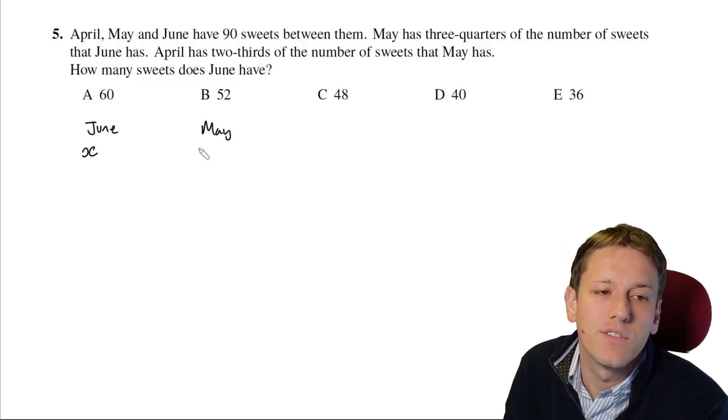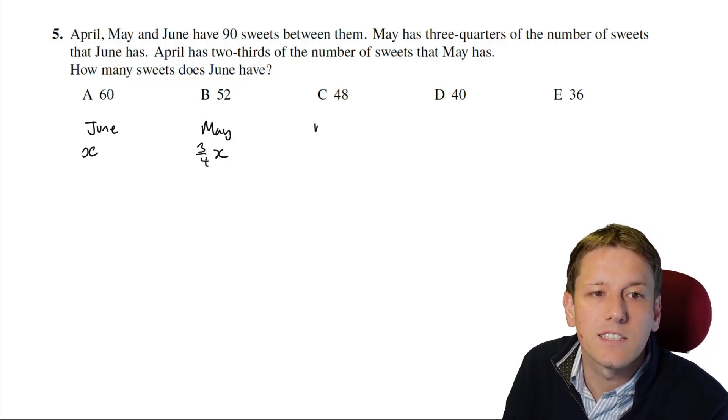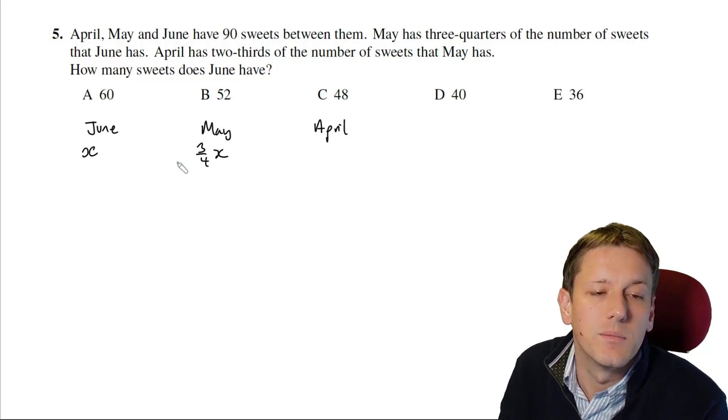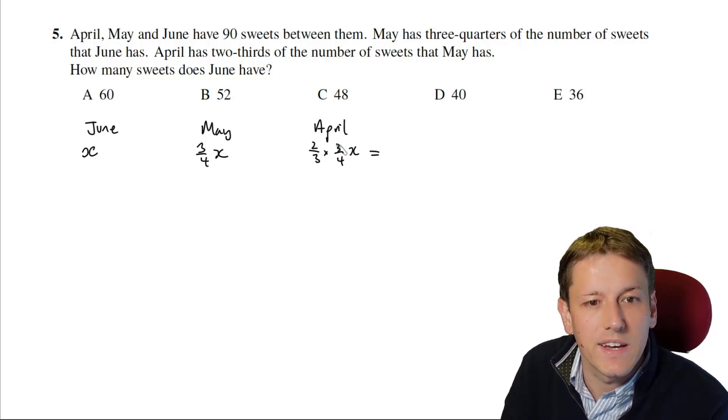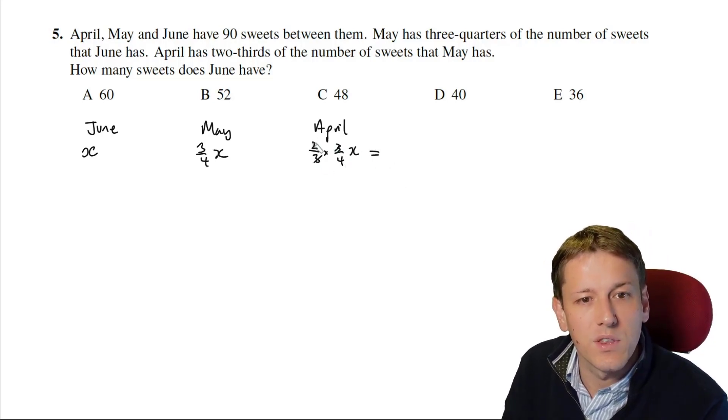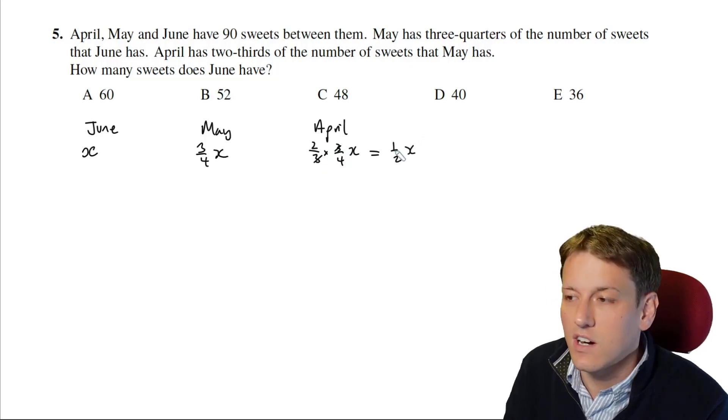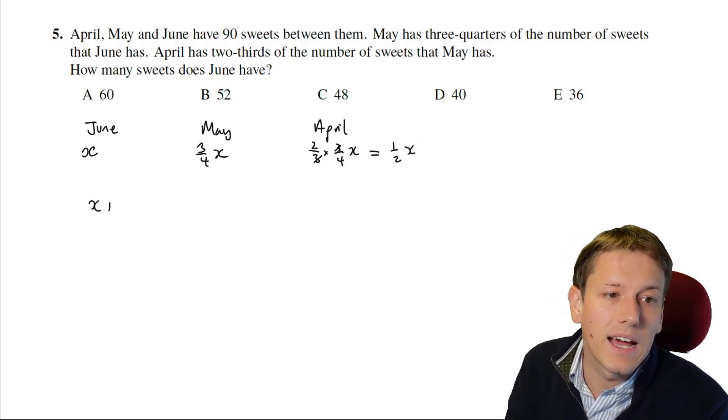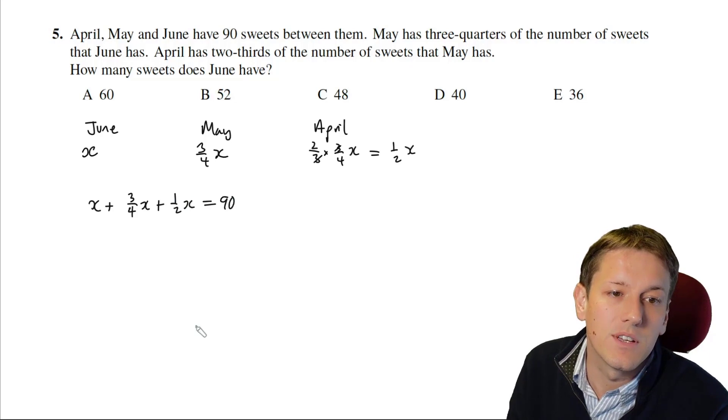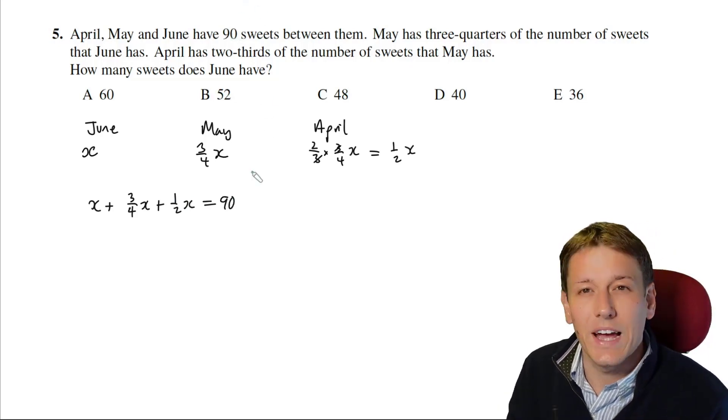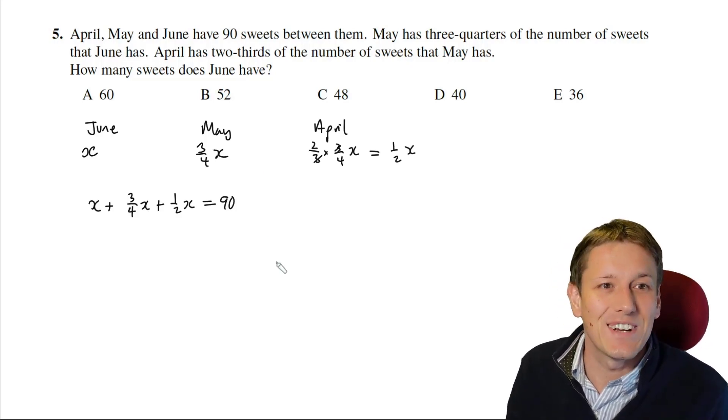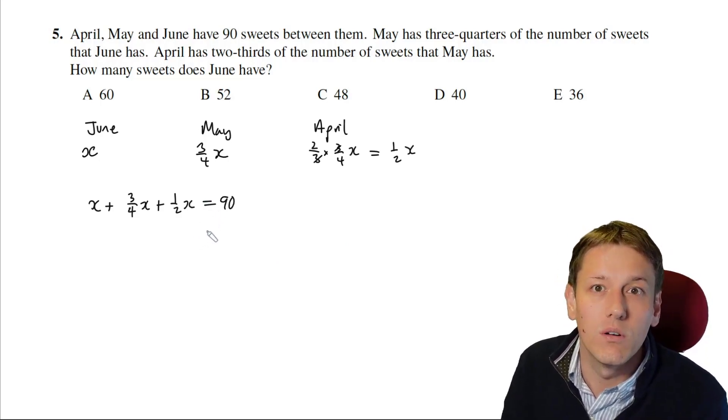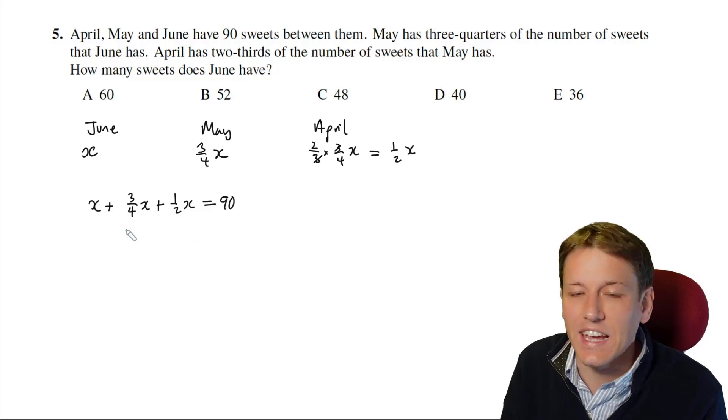So let's let X be the number of sweets that June has. May has 3 quarters of the number that June has, so that would be 3 quarters of X. And April has 2 thirds of the number that May has, so that would be 2 thirds of 3 quarters of X, or 2 thirds times 3 quarters of X. Now 2 thirds times 3 quarters, we can cancel the threes and also cancel the two and see that that's just a half X. So we get the equation that when I add these together, the total number of sweets, X plus 3 quarters X plus 1 half X, that must equal 90 sweets in total. Now how you go about solving this equation, there's two possible routes.